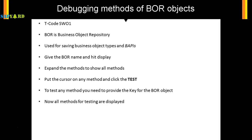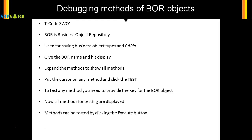It will then list all the methods. You select the method you want and click the Execute button. There are two options: whether you want to execute directly or execute in debugging mode. We will choose the debugging mode. Let us see in the next video how we can do this in our SAP system.